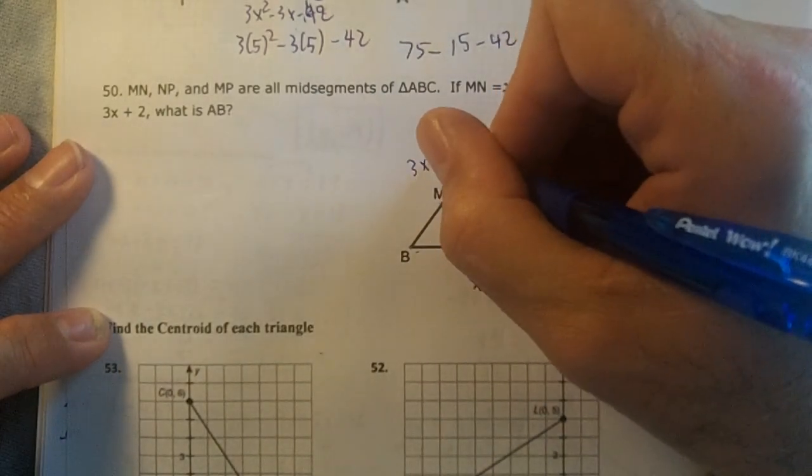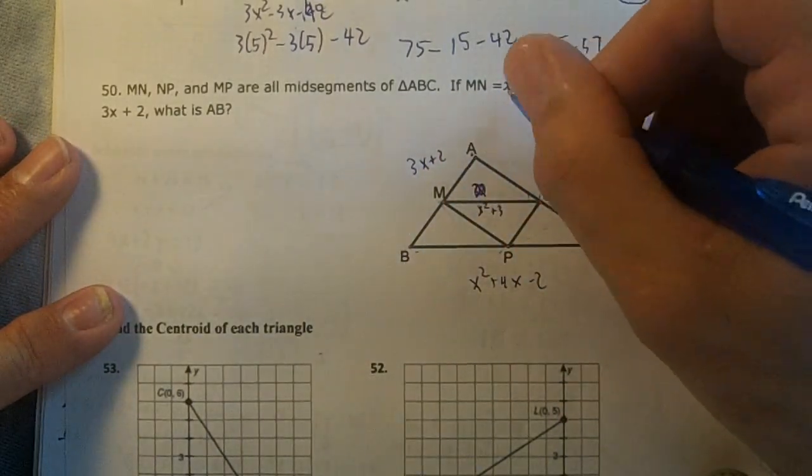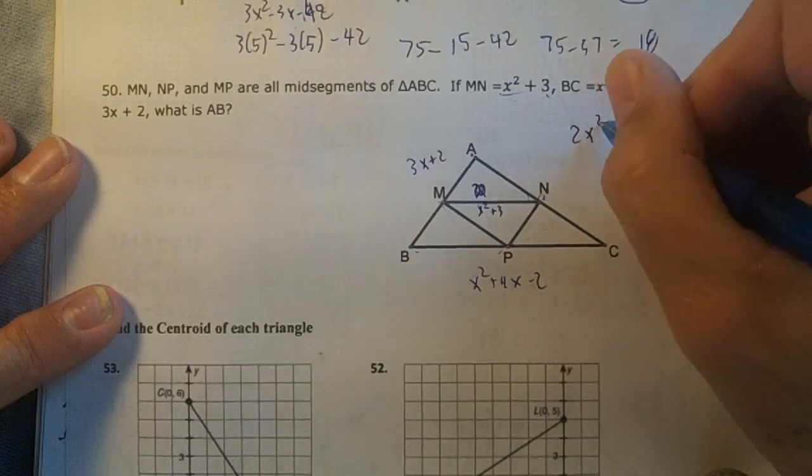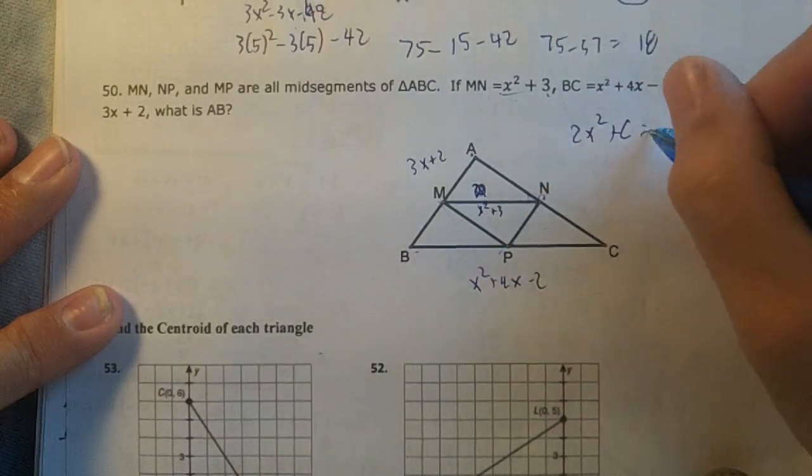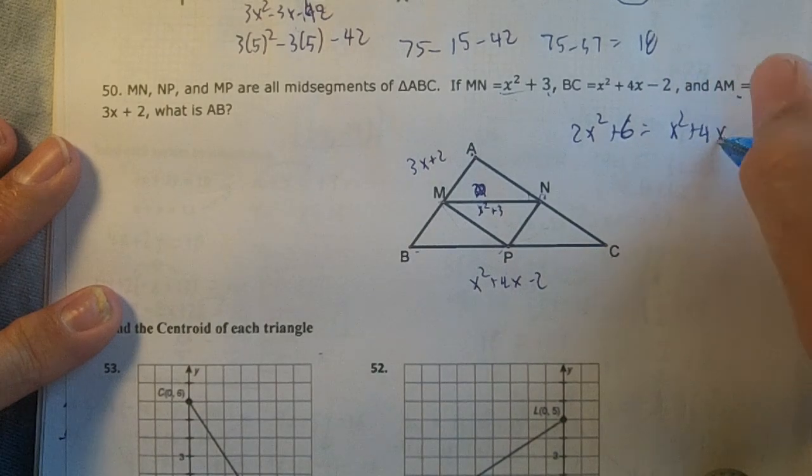So twice this equals this. I'm going to multiply 2 times this: 2x² + 6 equals x² + 4x - 2.